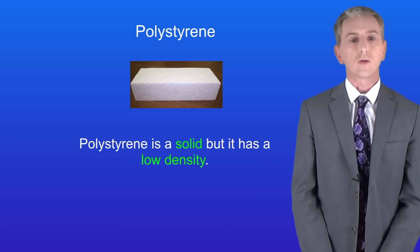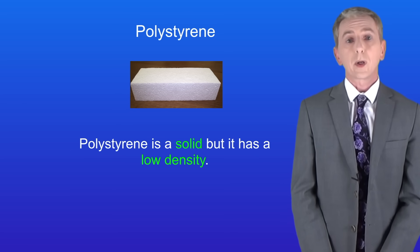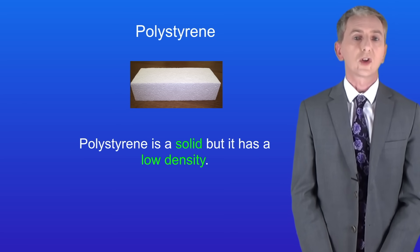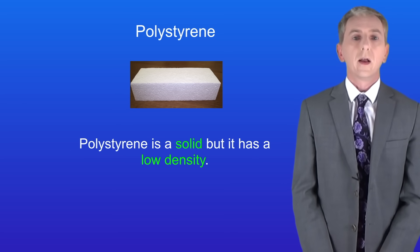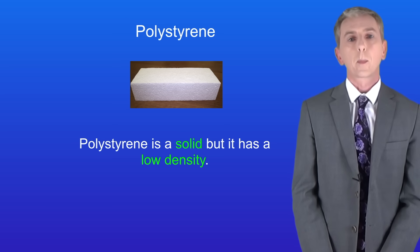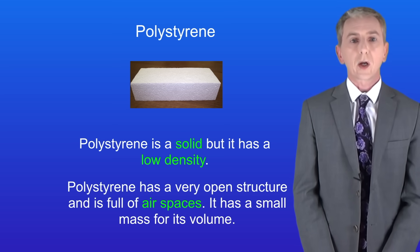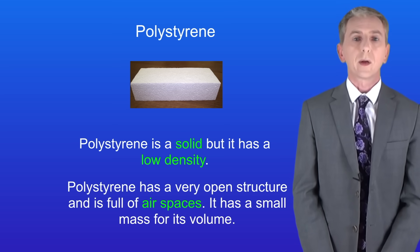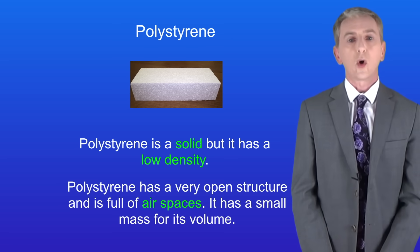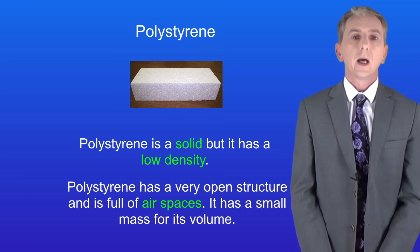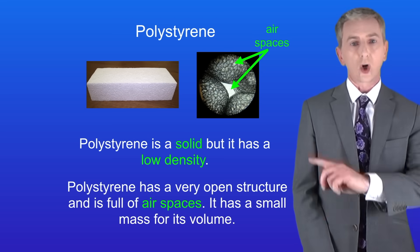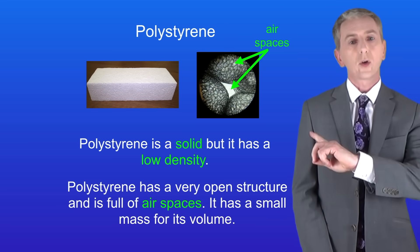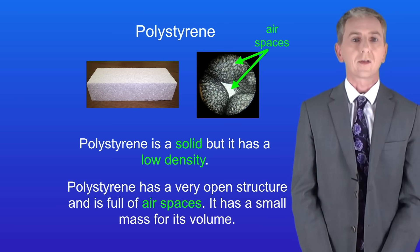There are some exceptions to these rules. For example, polystyrene which we saw earlier — this is a solid but it has a low density. That's because it has a very open structure and is full of air spaces, so it has a small mass for its volume. I'm showing you polystyrene under a microscope here and you can see the air spaces.